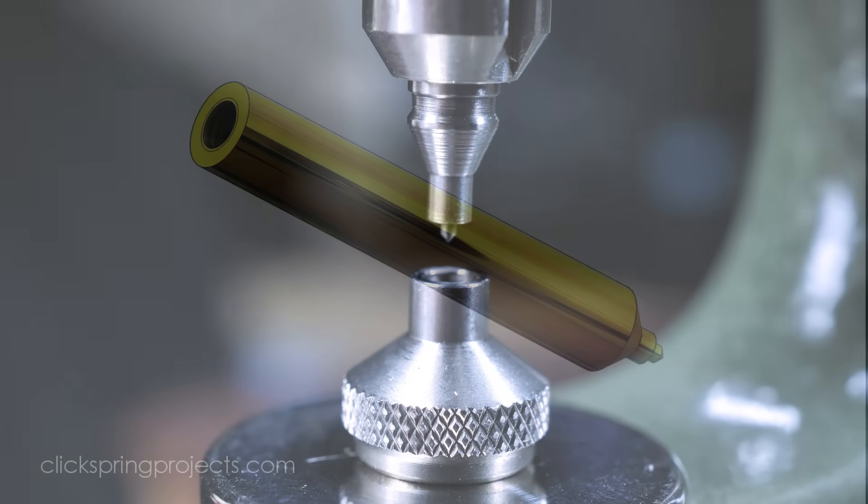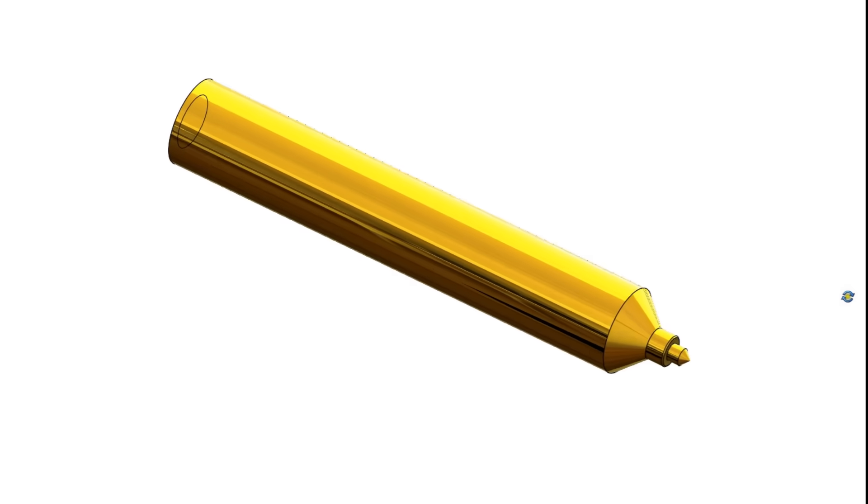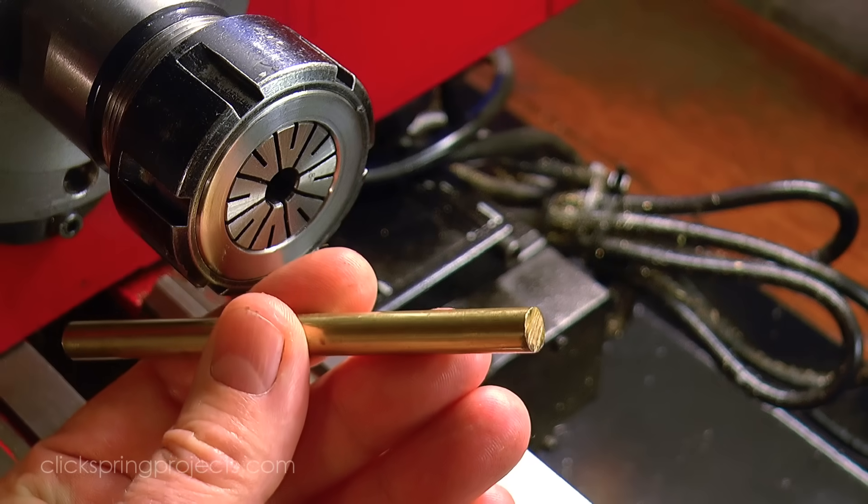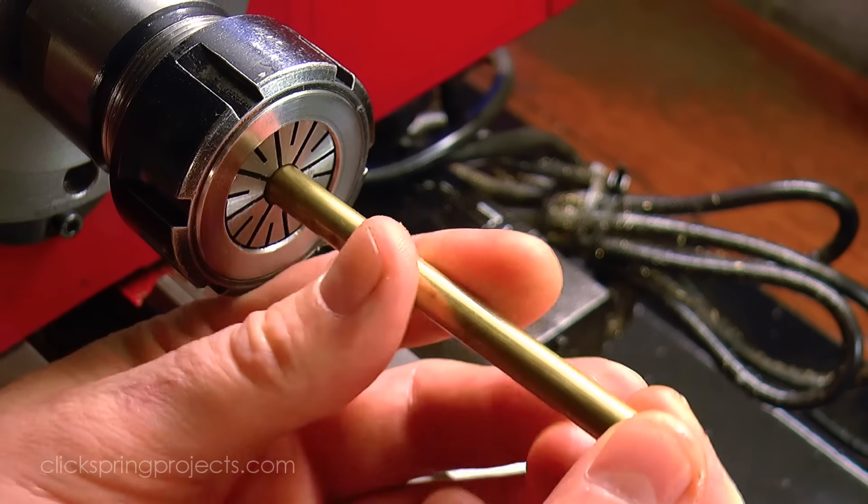The commercial pushers tend to be made of steel, although for a one-off low-use tool like this, brass is also a reasonable choice. It's also reasonable to make the pusher quite a bit longer than the commercial versions to make sure it's held true in a typical mill spindle collet.